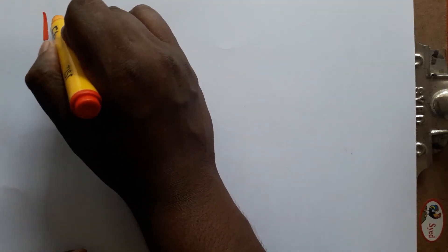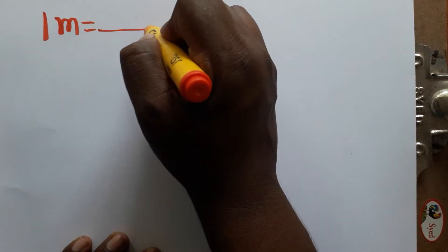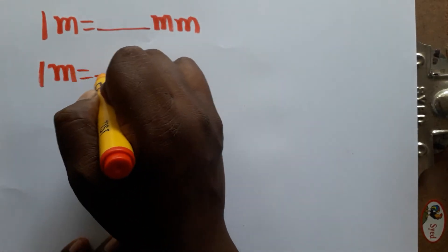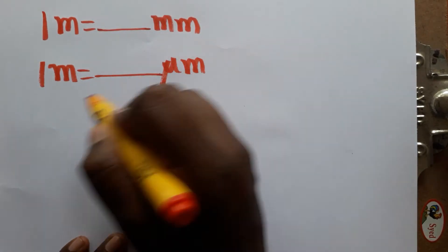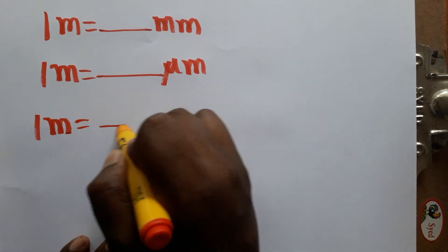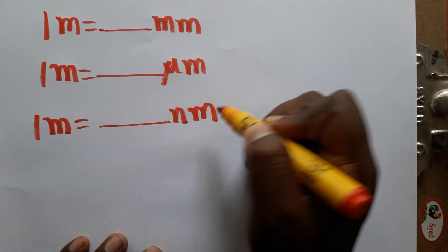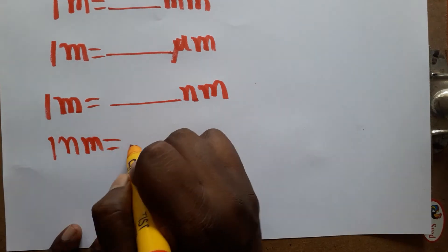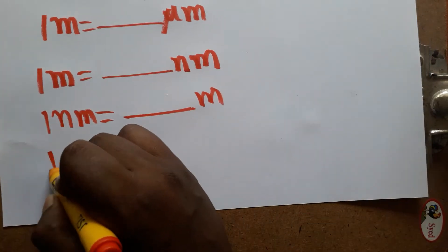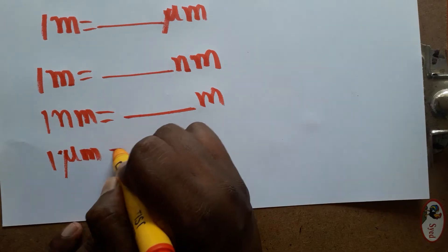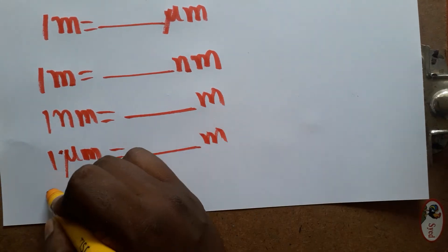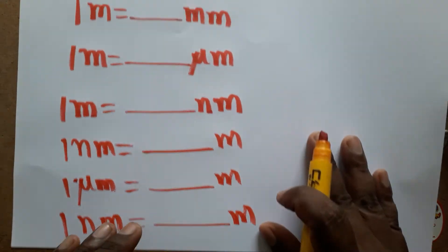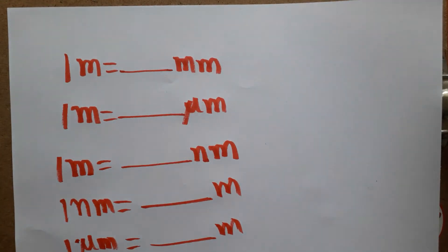Hello Friends, today we are going to learn: 1 meter is equal to how many millimeters, 1 meter is equal to how many micrometers, 1 meter is equal to how many nanometers, and also the reverse: 1 nanometer is equal to how many meters, and 1 micrometer is equal to how many meters. This is what we are going to learn.